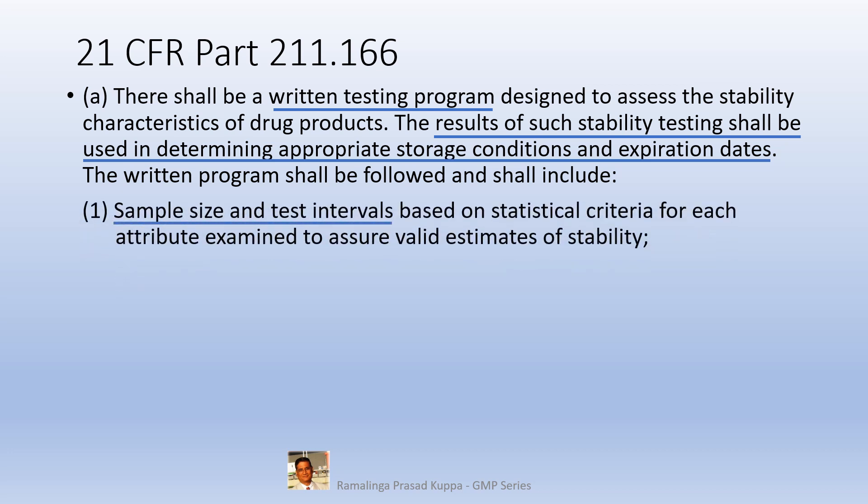Sample size and test intervals are based on statistical criteria for each attribute examined to assure valid estimates of stability. Sample size is determined by summing up the samples required for each test at different time stations of the study. As per Q1B guideline, one-third or half reduction in testing stations is also possible. A statistical evaluation should be done to establish how much sample is required for each time station and for the entire study. Valid examination of stability can be achieved effectively using a linear regression analysis.